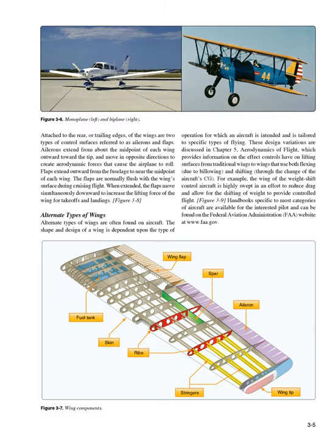Attached to the rear, or trailing edges, of the wings are two types of control surfaces referred to as ailerons and flaps. Ailerons extend from about the midpoint of each wing outward toward the tip and move in opposite directions to create aerodynamic forces that cause the airplane to roll. Flaps extend outward from the fuselage to near the midpoint of each wing. The flaps are normally flush with the wing's surface during cruising flight. When extended, the flaps move simultaneously downward to increase the lifting force of the wing for takeoffs and landings.